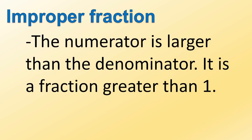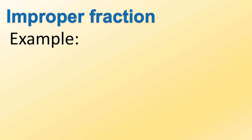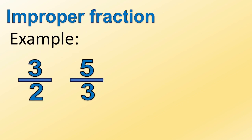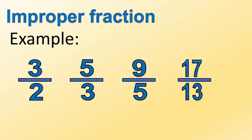Improper fraction: the numerator is larger than the denominator. It is a fraction greater than one. For example: three-halves, five-thirds, nine-fifths, seventeen-thirteenths.